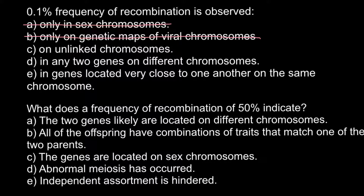Answer C: on unlinked chromosomes. This is also not true because when we have two non-homologous chromosomes, recombination cannot happen normally. Even if it is not a mutation of any kind, the number would not be 0.1% — it would be much, much smaller.